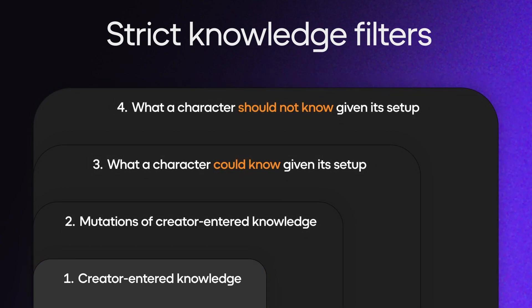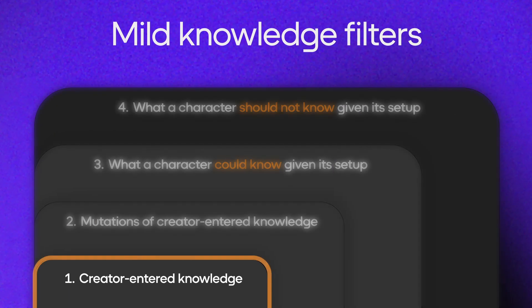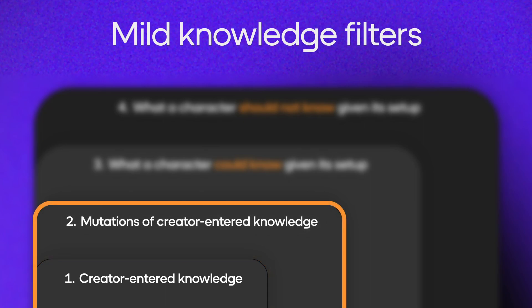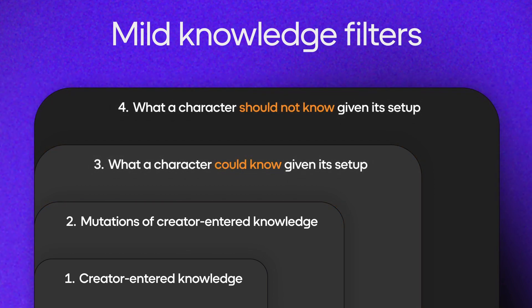This could be suitable for suspects in a murder mystery game or for an RPG quest giver. The mild control setting limits characters to information that is guided by knowledge inputted at design time. This includes mutations of creator-entered knowledge and what a character could know given its setup. This could be a helpful setting for simulation or role-playing games.